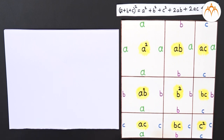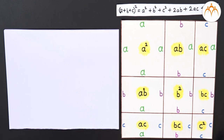This one is a rectangle with sides a and c, so has area ac. This one has lengths b and c, so the area is bc. And the last one is a square with side c, so area is c². Now we have these nine pieces, and the areas of all of these pieces add up to the area of the complete figure, that is (a+b+c)².